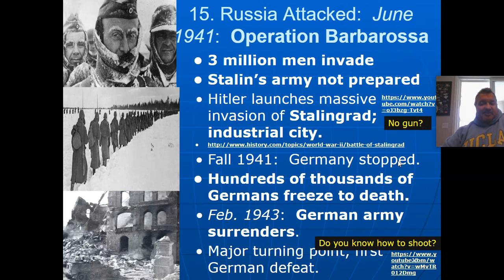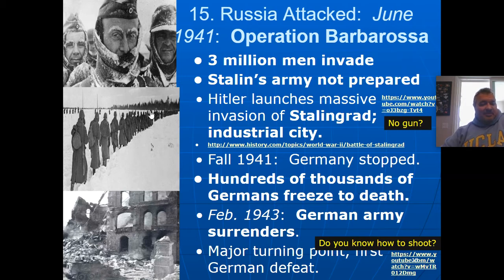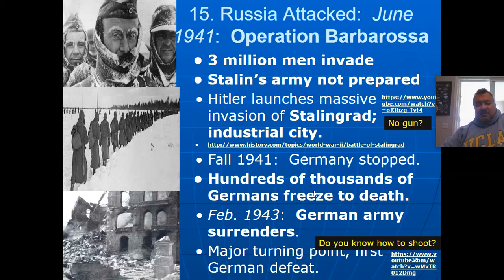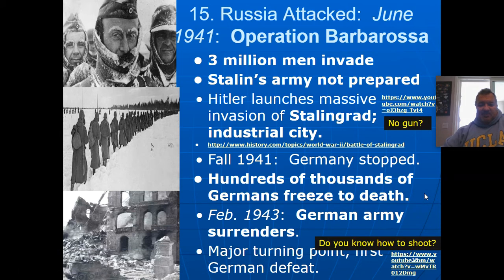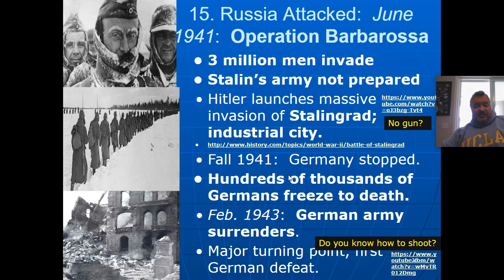In fall 1941, the Germans were eventually stopped. Hundreds of thousands of Germans froze to death. The Soviets were used to living in that weather and knew to put a little alcohol in their fuel and oil to keep things from freezing — the Germans didn't know that. The German army eventually surrendered in February 1943, even though Hitler had ordered no surrender or retreat. This was a major turning point and the first German defeat in Europe. After that, the Soviets kept pushing the Germans back all the way to Berlin.